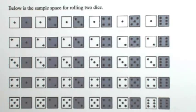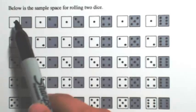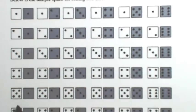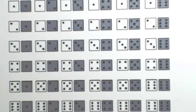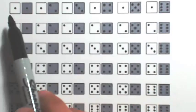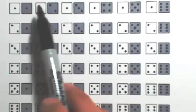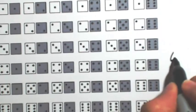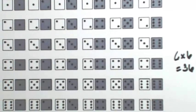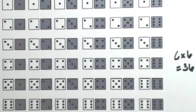Below is the sample space for rolling two dice. For the first die, which is the lighter color one here, there's six possibilities all the way down to six. For the darker one here, we also have six possibilities. So if there's six ways for the first one and six ways for the second one, then six times six equals 36. So there's 36 possibilities for how two dice can be rolled.